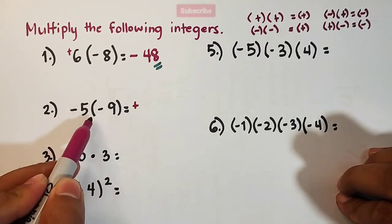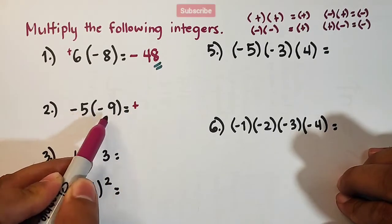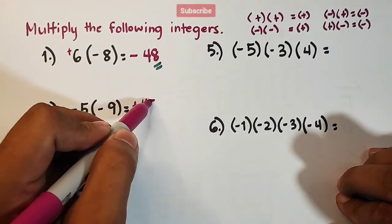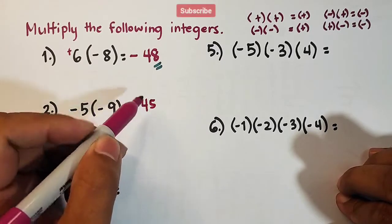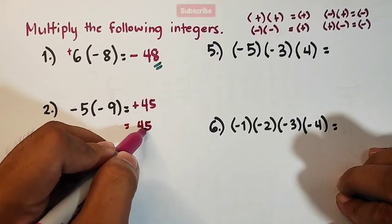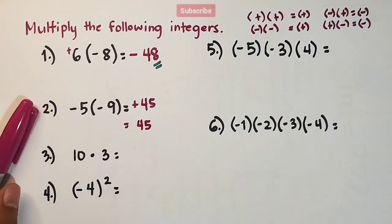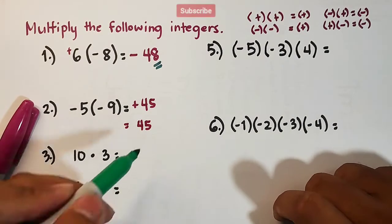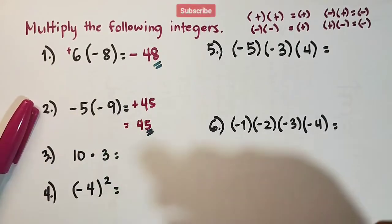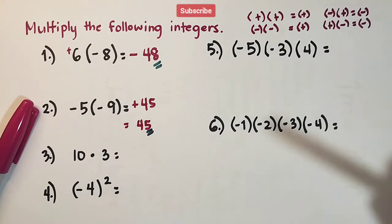So, negative times negative is positive, then 5 times 9 is 45. So, instead of positive 45, your answer should be simply 45, because it is already understood that it's positive if there's no sign or symbol.